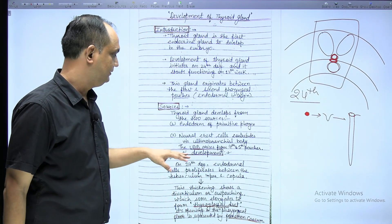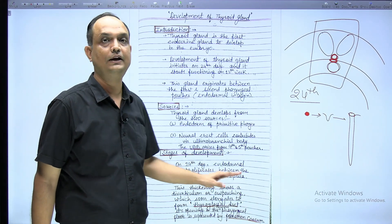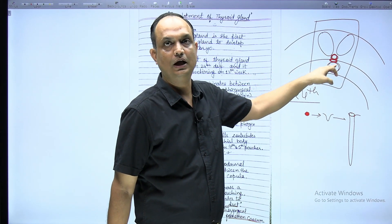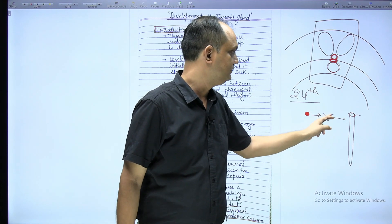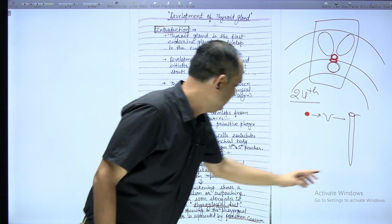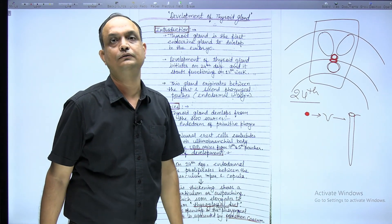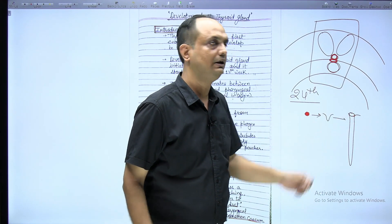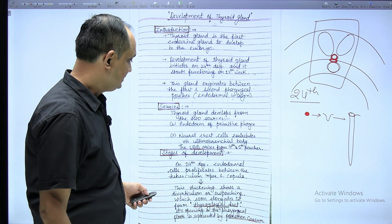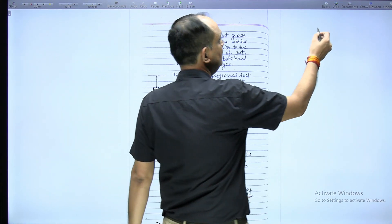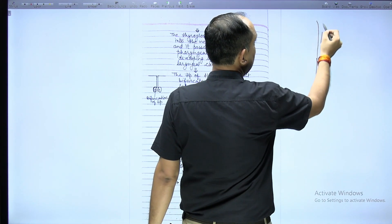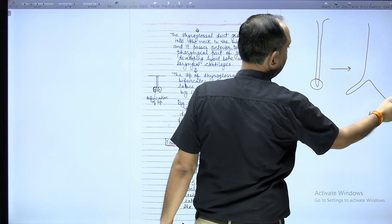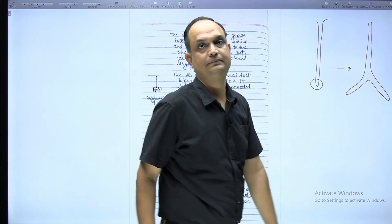When writing the development stage by stage: first there is a formation of a proliferated area between the two swellings known as the tuberculum impar and copula. From this swelling there is a formation of a diverticulum. This diverticulum will elongate, and this elongated diverticulum is going to form your thyroglossal duct. The site of this invagination into the tongue is known as the foramen cecum. The tip of the duct then proliferates and later bifurcates into the right and left parts.